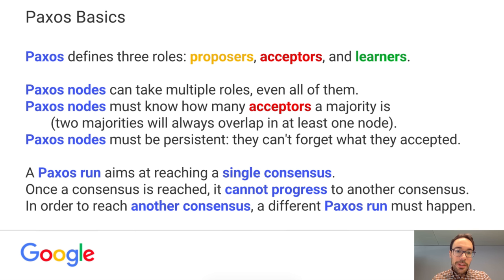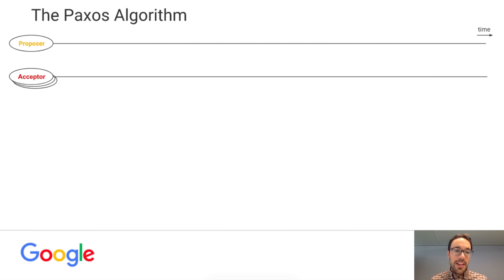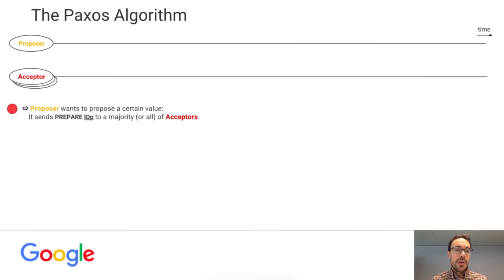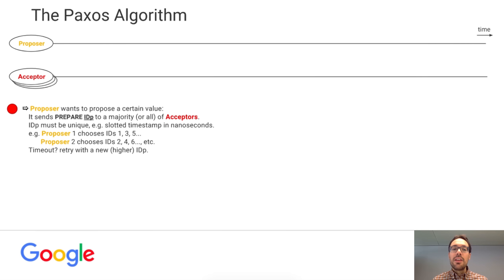Now we can move to introducing the actual Paxos algorithm. Let's say we have a proposer and three acceptors, so the majority of acceptors would be two. The proposer wants to propose a certain value. It will send a prepare(ID) message to a majority or all of the acceptors. The ID must be unique — it could be, for example, the timestamp in nanoseconds slotted by the proposer, so that proposer one can choose IDs 1, 3, 5, and so on, and proposer two can choose IDs 2, 4, 6, etc. The point is that no ID is used twice ever. In the case of a timeout, the proposer will retry with a new, higher ID.